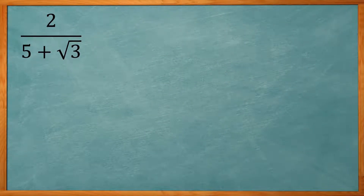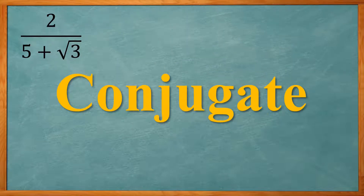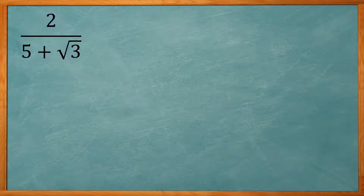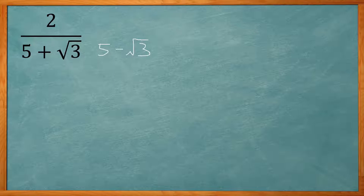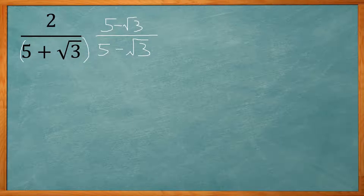Now this one looks a little different. We have 2 over 5 plus the square root of 3. This one is going to use something called the conjugate. With the conjugate, we're going to multiply the bottom by 5 minus the square root of 3 — all we did was change the sign in the middle. We're going to multiply the top by the same thing: 5 minus the square root of 3.